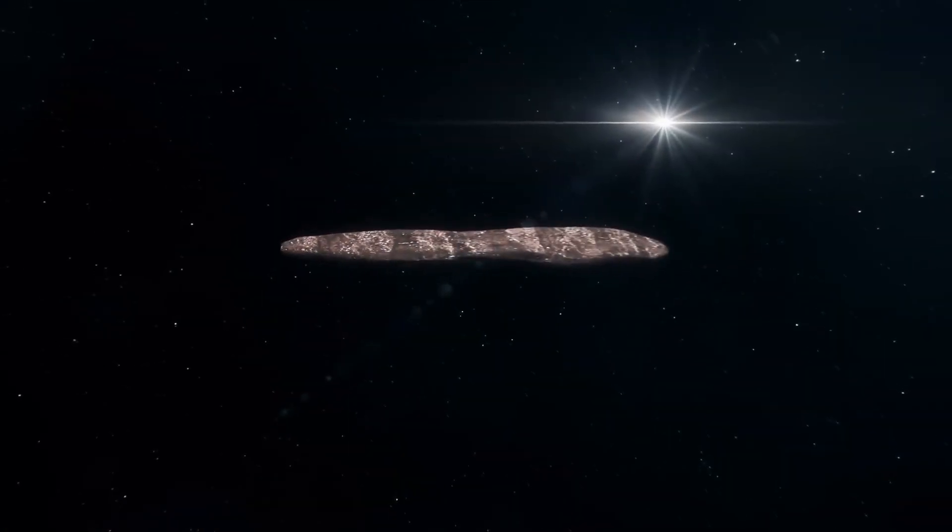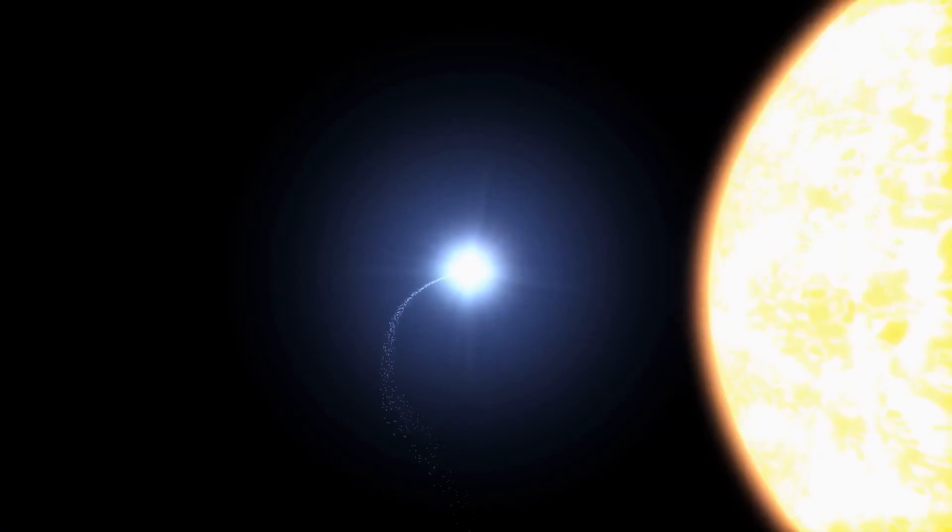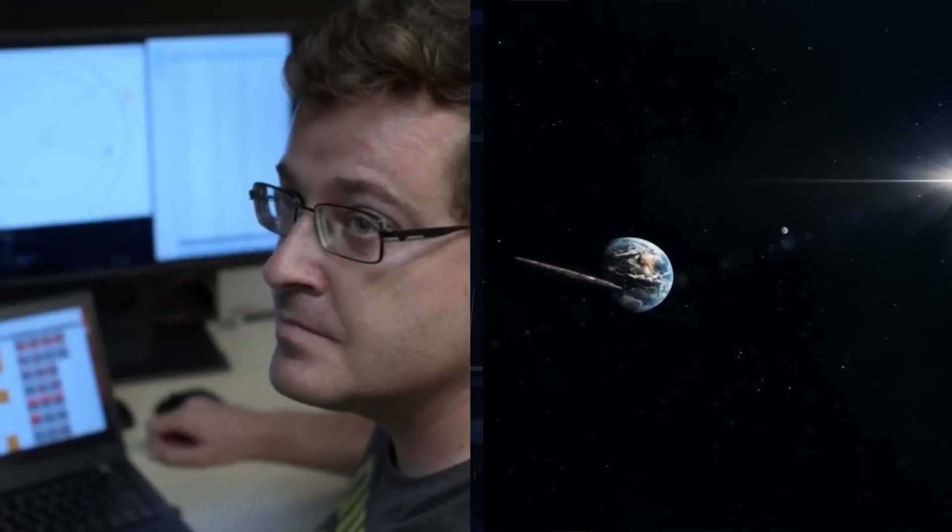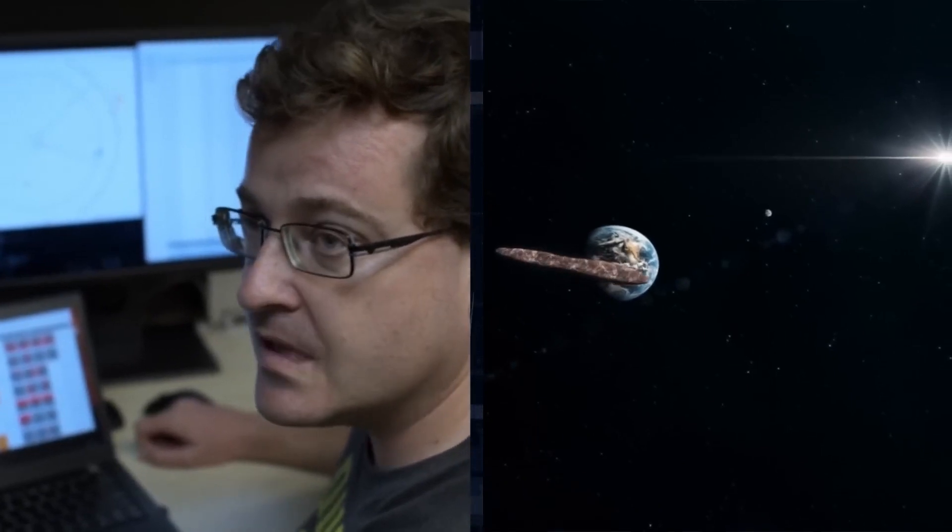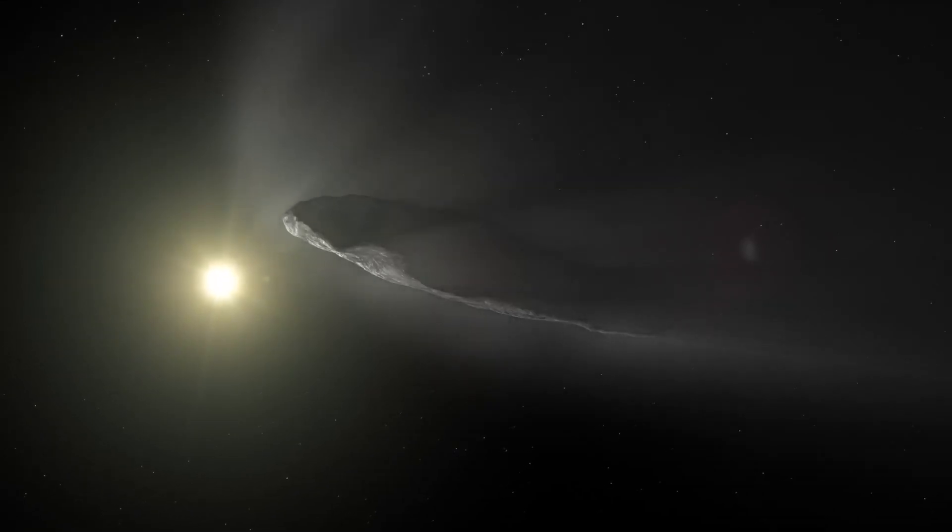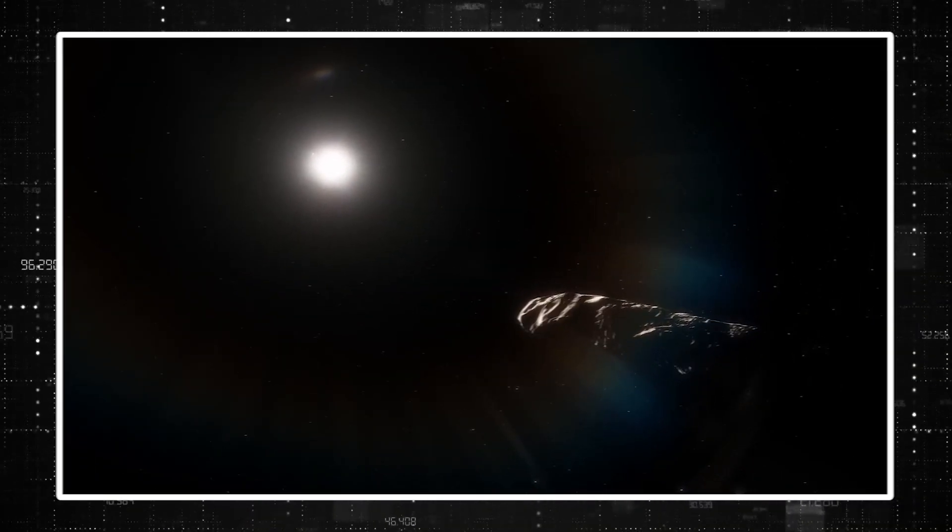The mystery of Oumuamua kept on growing with every question that was answered. This made it even more enigmatic for the scientists, causing a huge stir amongst multiple scientific domains. The race was on as astronomers and cosmologists tried to understand its true nature. Some suggested that maybe learning about its shape or the way it moves could help us learn more about interplanetary travel, which could revolutionize it entirely.